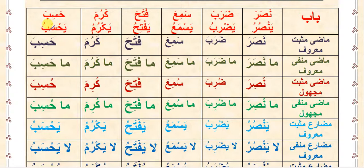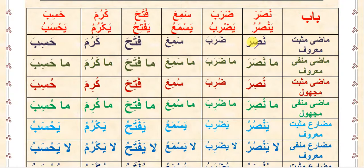I think it will be very helpful if you understand that here I have written each and every single bab with its fi'l and its i'rab. So if you want to make a saga from bab nasara yansuru from mazi musbat maroof, you will simply follow this i'rab and keep inserting the alaamat of mazi for each saga. For tasniyah simply add alif, for jama simply add waw-alif, for wahid mutakallim simply add ta-marbuta, and for manfi simply add 'ma'.